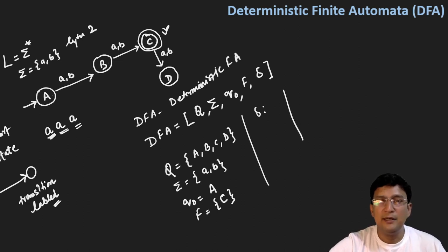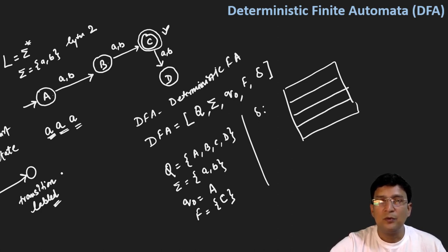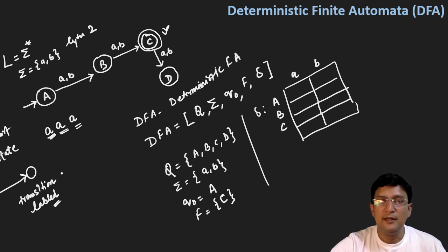We define the transition function δ using a table with four rows (states A, B, C, D) and two columns (symbol a and symbol b). On state A with input a → move to B; on A with input b → move to B; on B with input a → move to C.